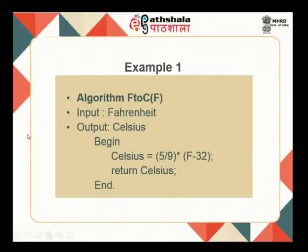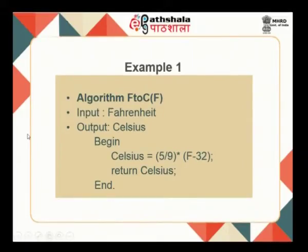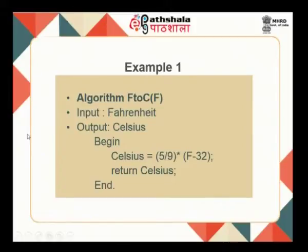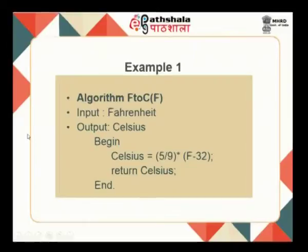The algorithm can also be written as a function where the main algorithm passes the value directly. The formal algorithm is named F2C, taking Fahrenheit as input parameter and producing Celsius as output. 'Begin' and 'end' are keywords marking where the algorithm starts and ends. Inside, we compute Celsius using the formula and return the Celsius value to the main algorithm. This is how a simple algorithm looks.